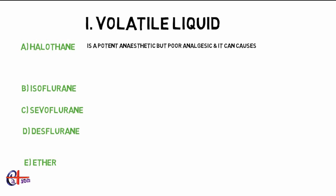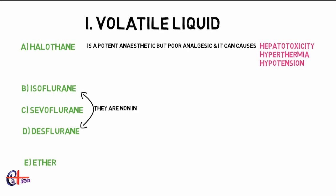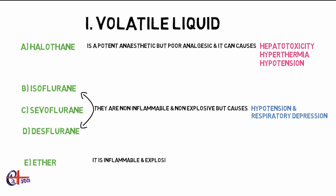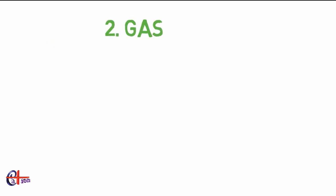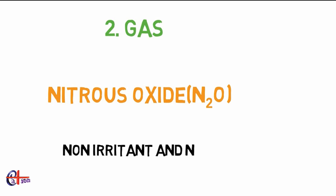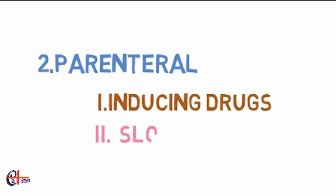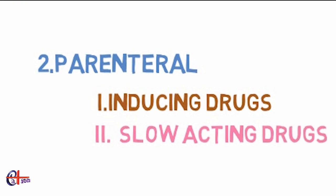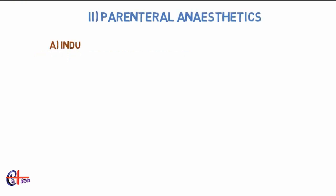Examples of volatile liquids are halothane, isoflurane, sevoflurane, desflurane, and ether. Halothane is a potent anesthetic but a poor analgesic, and it can cause hepatotoxicity, hypothermia, and hypotension. Isoflurane and sevoflurane cause hypotension and respiratory depression. Ether is inflammable and explosive but is an excellent analgesic and causes no hepatotoxicity. The example of a gas is nitrous oxide, which is non-irritant, non-inflammable, and has a wide margin of safety.